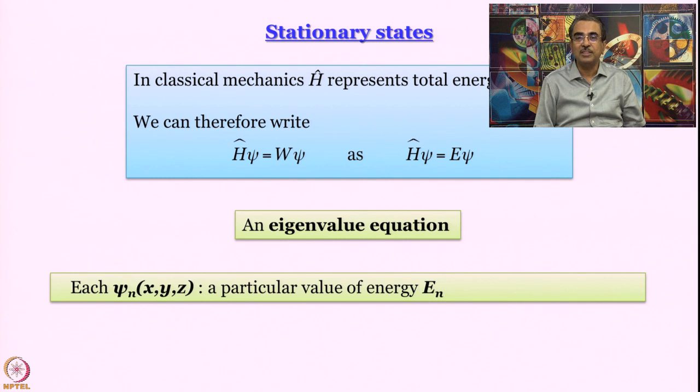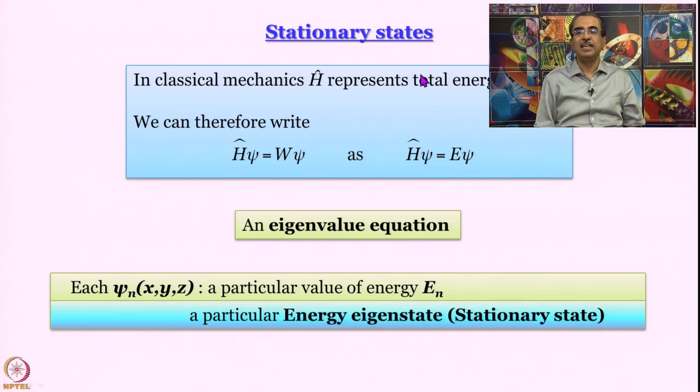The question is how do you ask it? You ask it by making the Hamiltonian operator, the total energy operator, operate on it. And how does it give the answer? It gives the answer in the form of an eigenvalue, energy eigenvalue here. That is why we say that each psi is a particular energy eigenstate.